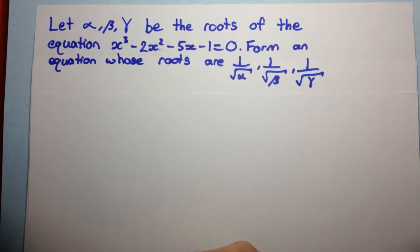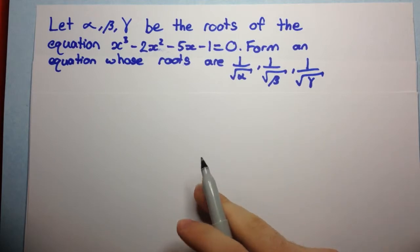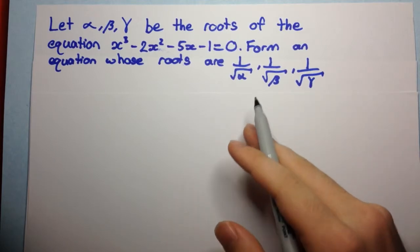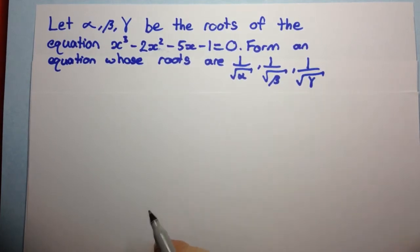And it wants you to form an equation whose roots are 1 over the square root of alpha, 1 over the square root of beta, and 1 over the square root of gamma.